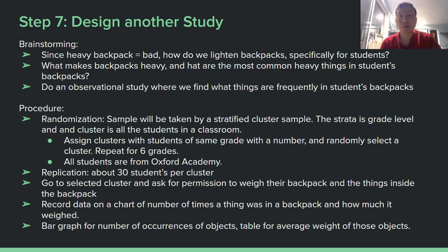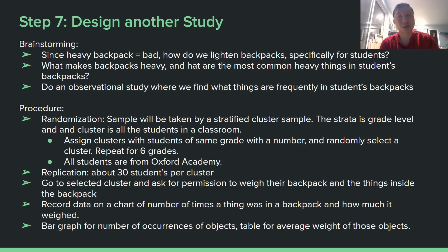Step 7: design another study. Since heavy backpacks are bad, I decided to investigate how we can lighten backpacks for students. What makes backpacks heavy? What are the most common heavy things in students' backpacks? I'd do an observational study to find the items frequently in students' backpacks. For randomization, the sample will be taken using stratified cluster sampling — stratified by grade level, with clusters being all students in a classroom. We'd use replication because there are about 30 people per cluster, and randomization to ensure we can generalize about the entire school. Stratification by grade level makes sense because harder classes and AP textbooks affect backpack weight. I would record the data on a chart, make a bar graph for number of occurrences, and a table for average weight.